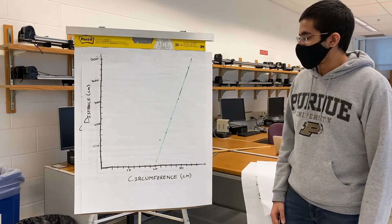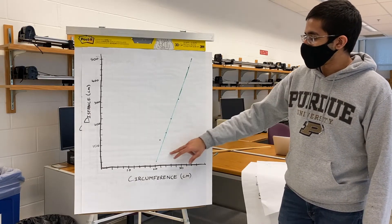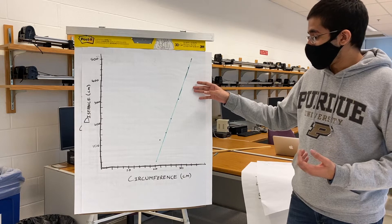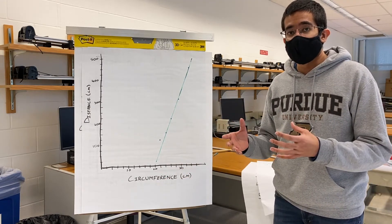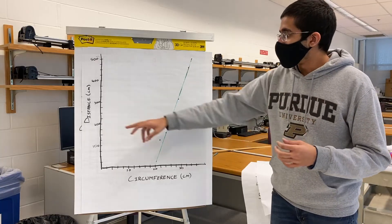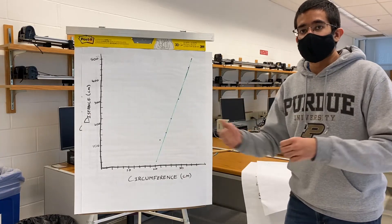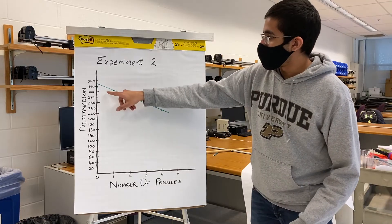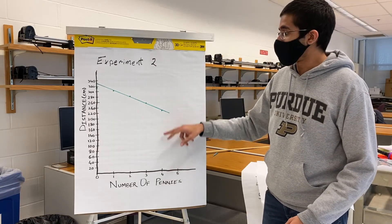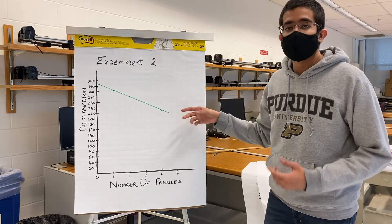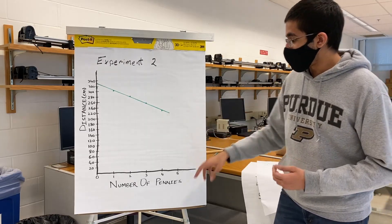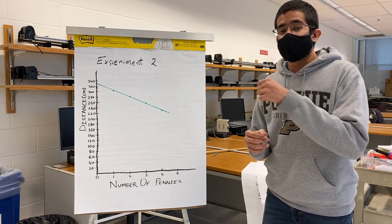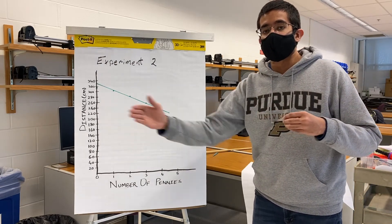Let's discuss our plots. In the first experiment, we have a straight line going upwards — the bigger our balloon, the more circumference, which indirectly means more air, and the more distance we cover. So more air equals farther we go. In our second experiment, the plot goes downwards — it has a negative slope. That means the more pennies, the more the balloon weighs, and the less distance it covers. As we kept adding pennies, we noticed the balloon kept going a shorter and shorter distance. That basically concludes our two experiments.